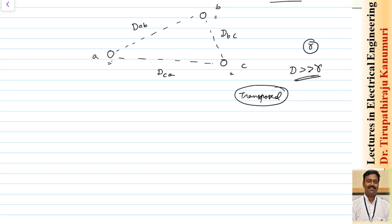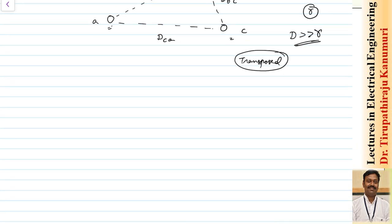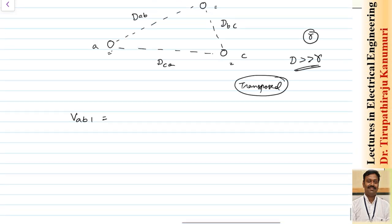We need to find the expression for the potential between conductors A and B for each of these three sections, and then calculate the average value. In position number one, V_AB is calculated as follows.